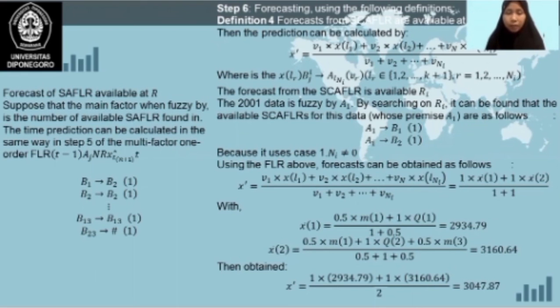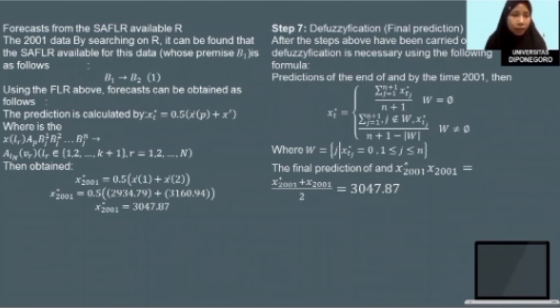Then step number six is forecasting using the following definition. Forecasting from the SCAFLR, the result value of the SCAFLR as we can see on the screen. Then the forecast from the SCAFLR available at R, we can see on the screen too.